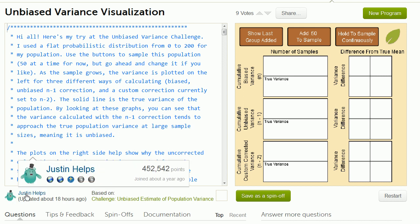Here's a simulation created by Khan Academy user Justin Helps that tries to give us an understanding of why we divide by n minus 1 to get an unbiased estimate of population variance when we're trying to calculate the sample variance.